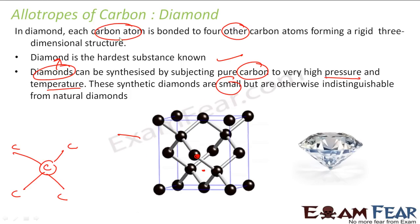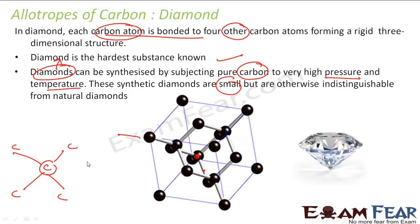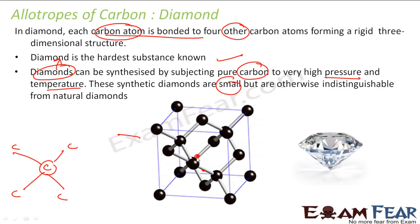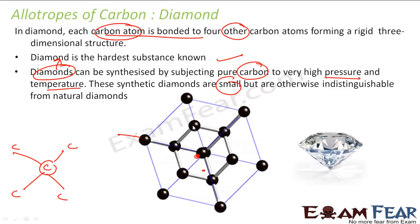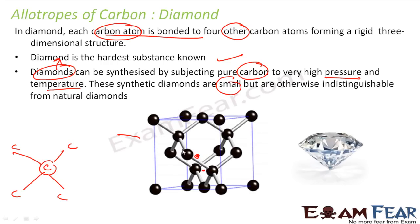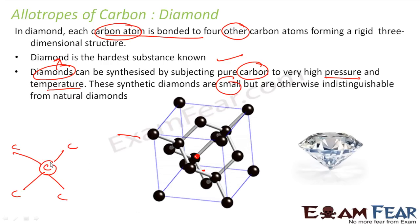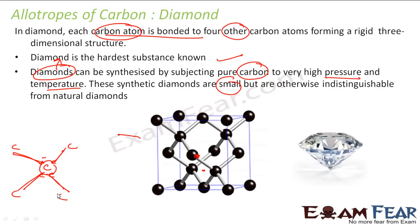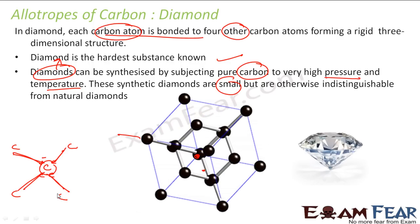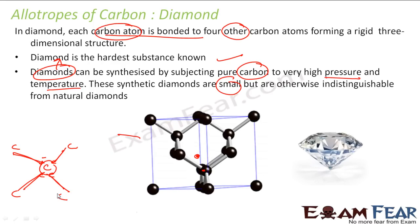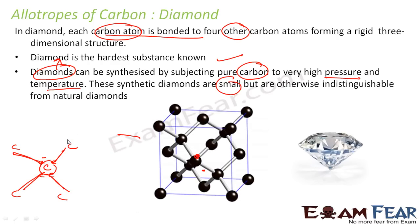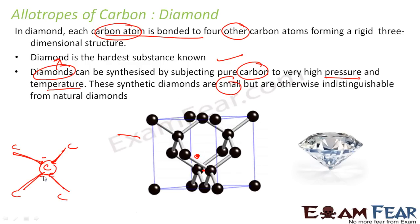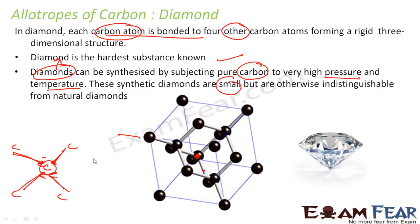The key point to note is that each carbon atom is bonded to four other carbon atoms in diamond. Because of this, there are no free electrons — all four electrons of each carbon atom are used to form covalent bonds. To conduct electricity, a material needs free electrons, and since there are none here, diamond is a non-conductor of electricity.